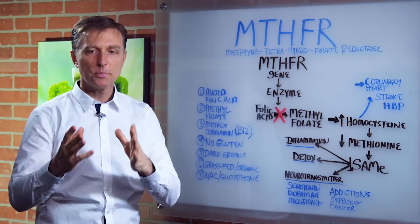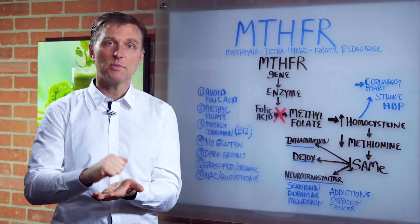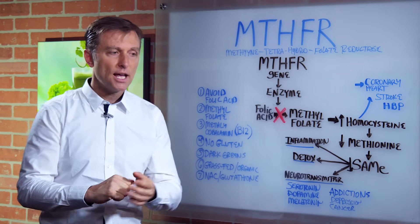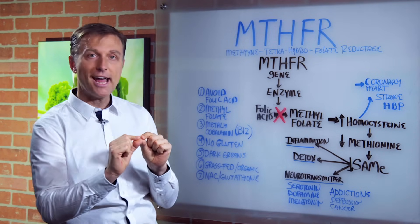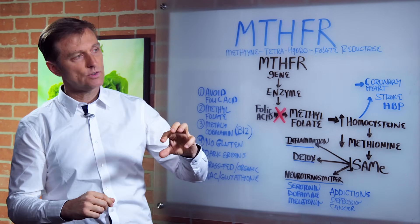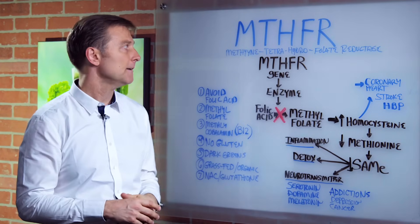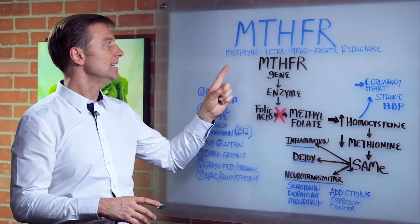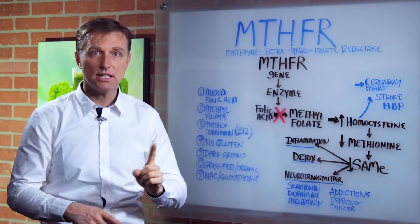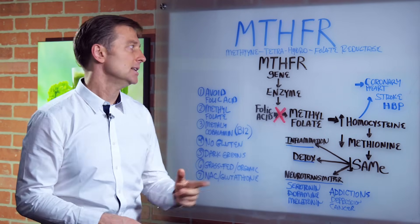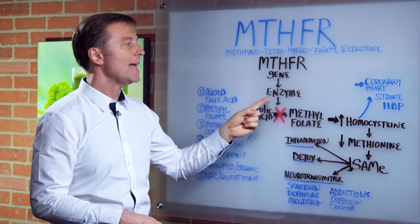You have the blueprints. You have a copy machine — literally a copy machine in your cells. You have a translator. You have little things that help check for errors. Then you have another machine over here that builds the different body parts. A defect in this specific MTHFR gene causes a defect in the MTHFR enzyme.